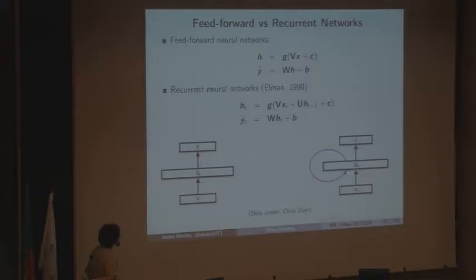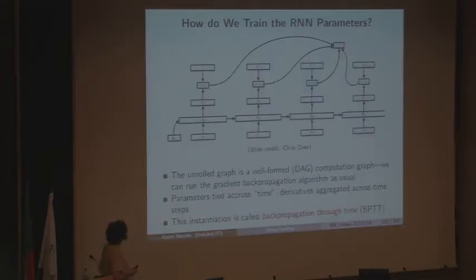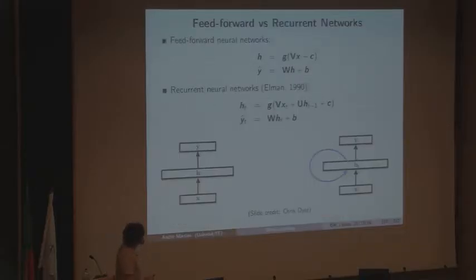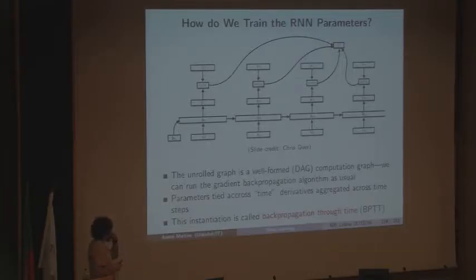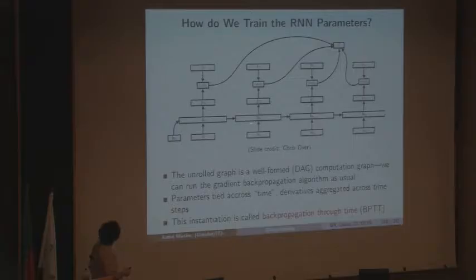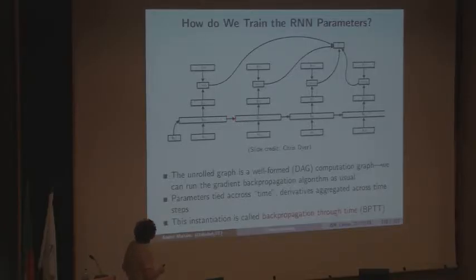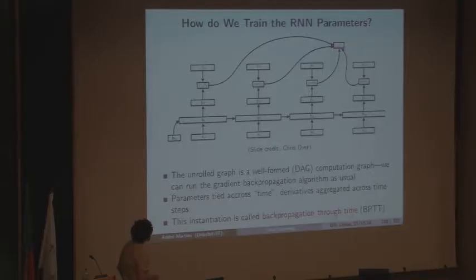Although it looks like there is a loop, there is no loop in the computation graph. We just need to unroll the network to obtain an unrolled representation. With four inputs, each produces states H1, H2, H3, H4, where for example H2 depends not just on X2 but also on H1. When unrolled, this is still a DAG with no loops, so we can run gradient backpropagation as usual.